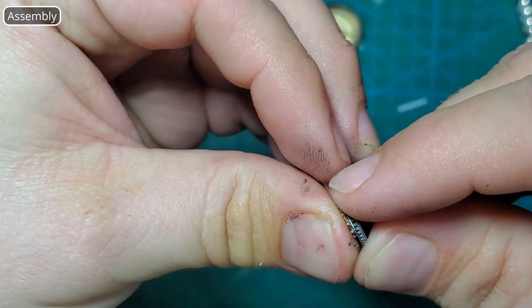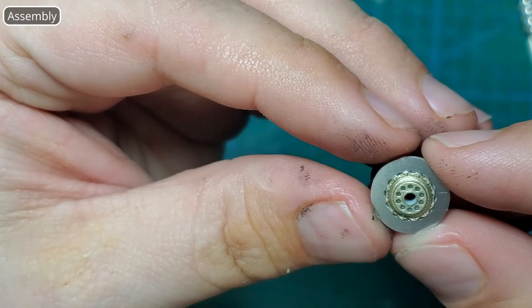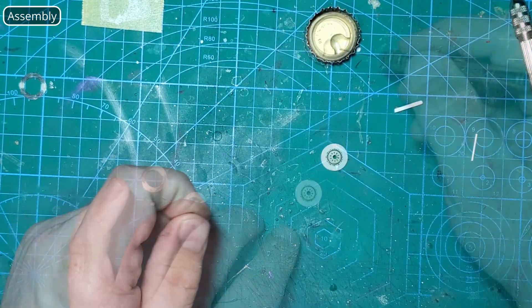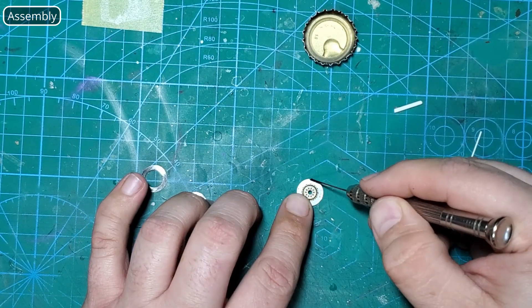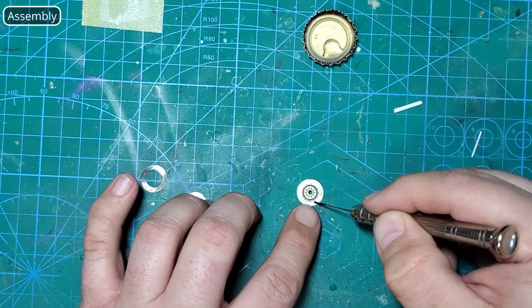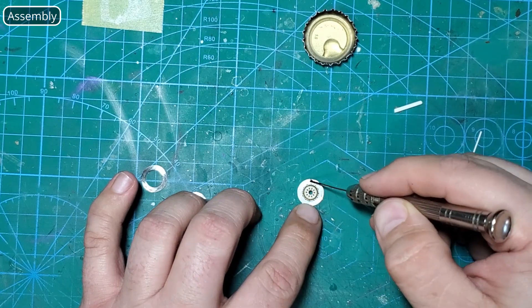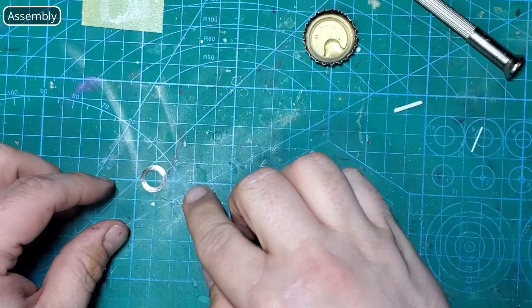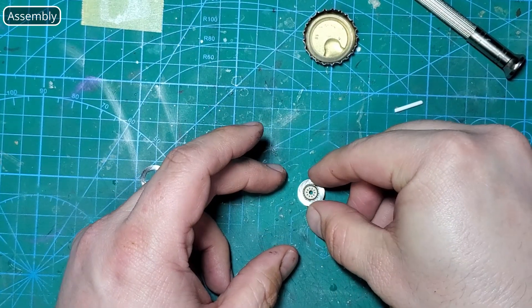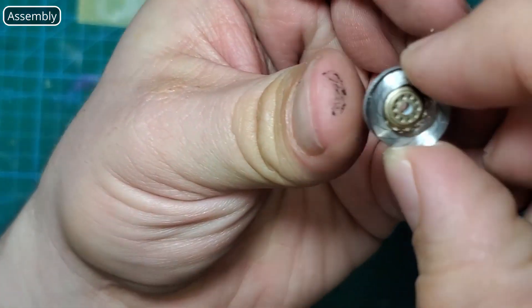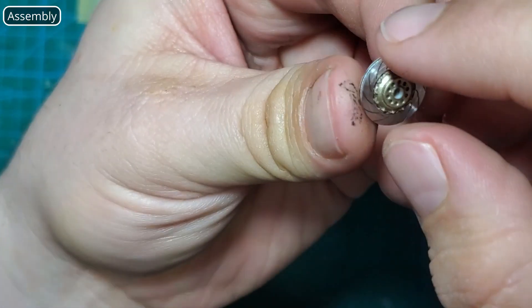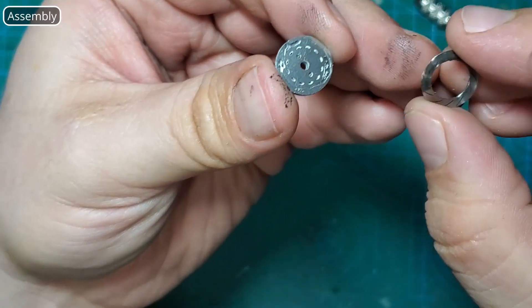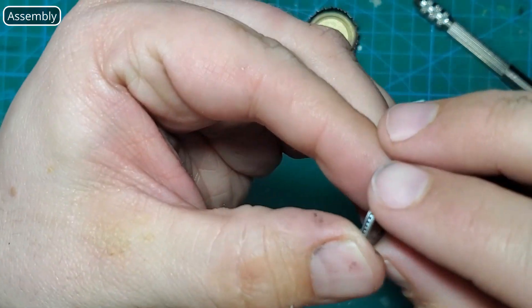Now we're going to glue our grooved rings onto the front and back of the disc. Just apply some super glue evenly around the disc area and then set your ring in place. Repeat for the back side and the discs are done.